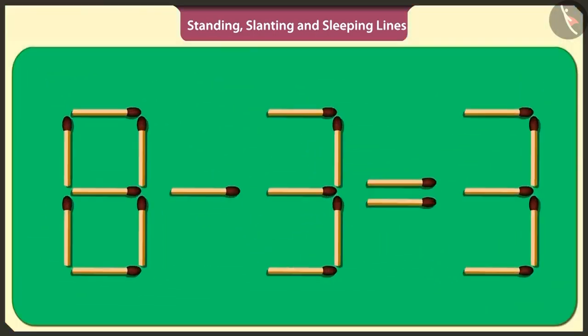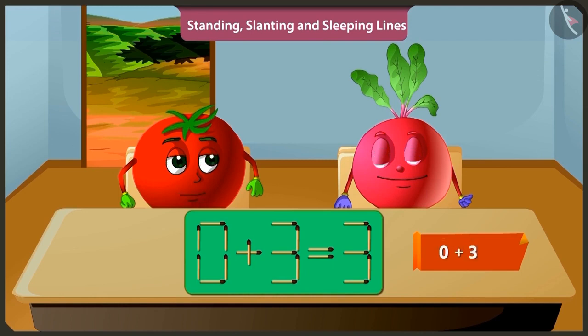Okay. If I lift this sleeping stick in the middle of number eight and place it above the symbol of subtraction like this, then the puzzle will be solved. Yes, adding three to a zero will make three only. Well done.